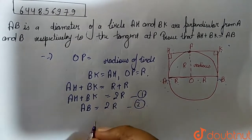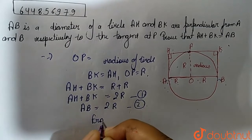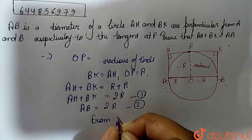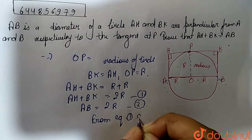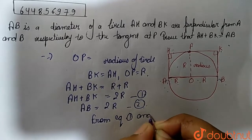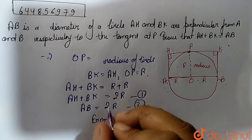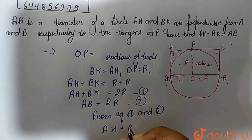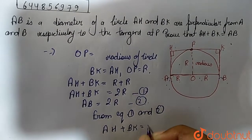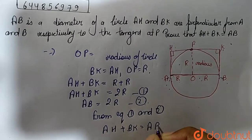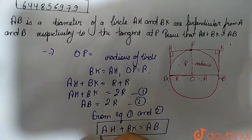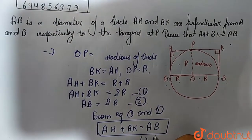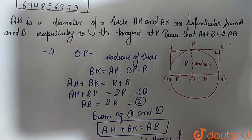From equation number 1 and equation number 2, we can conclude that AH + BK = AB. This is what we had to prove, so hence it is proved that AH + BK = AB.